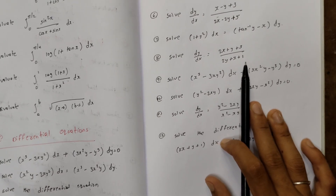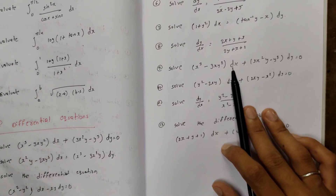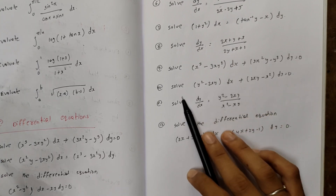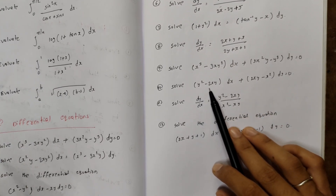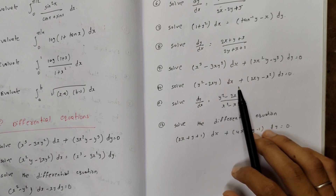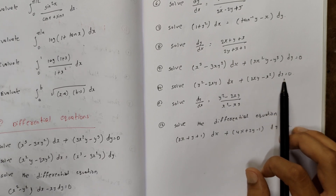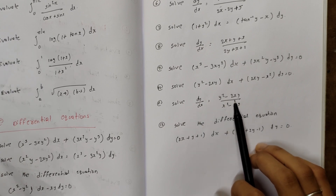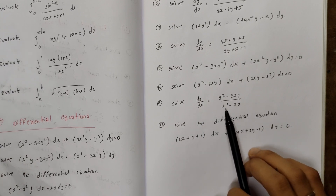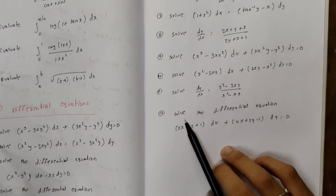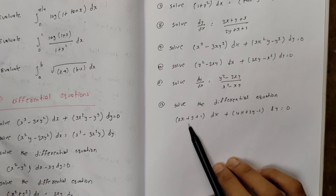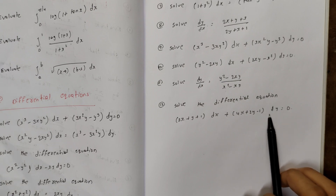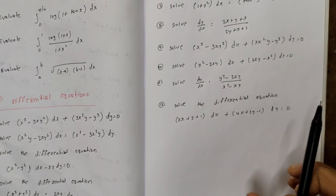Solve (x³-3xy²)dx+(3xy-y³)dy=0. Solve (y²-2xy)dx+(2xy-x²)dy=0. Solve dy/dx = (y²-2xy)/(x²-xy). Solve (2x+y+1)dx+(4x+2y-1)dy=0.